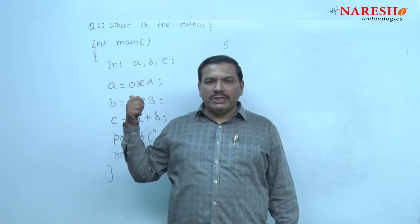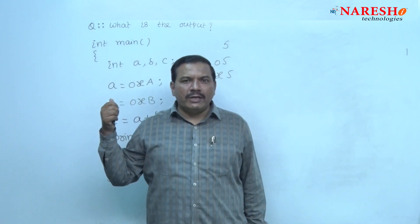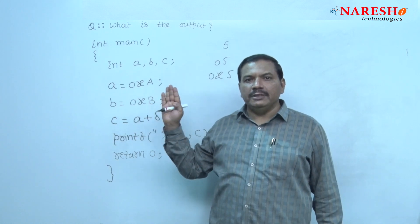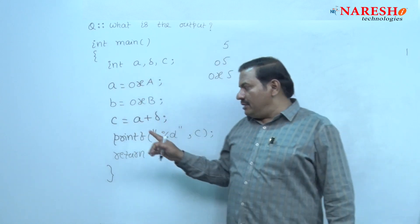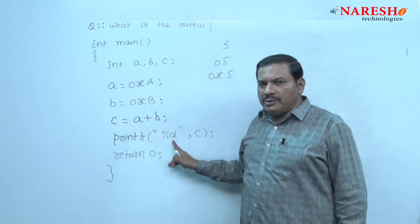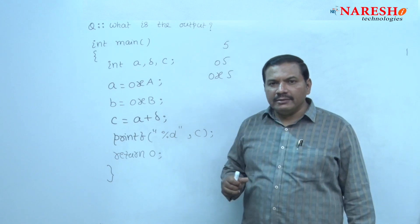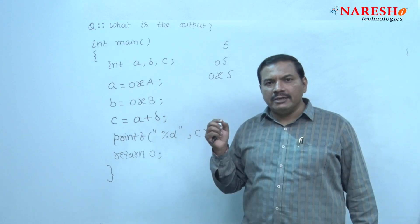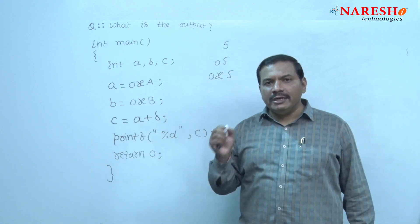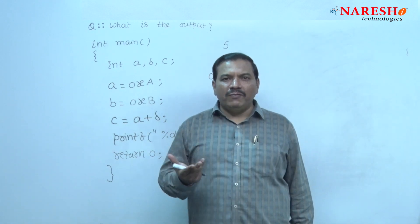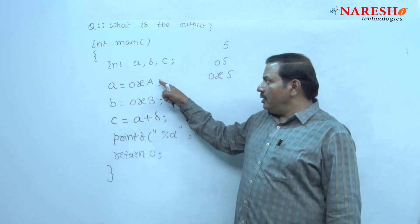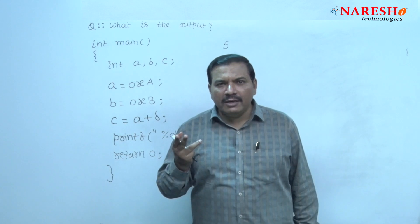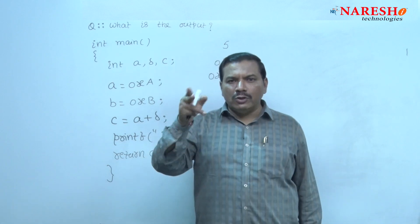Hence, in this question, two integer constants are given — A and B — of type hexadecimal. But the result is printed in a decimal format. In printf, the format specifier given is %d. So the result is printed in decimal format.